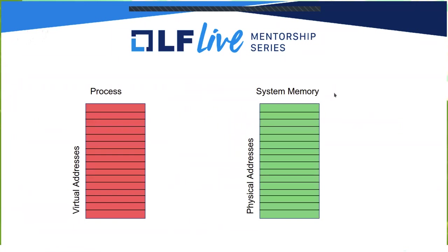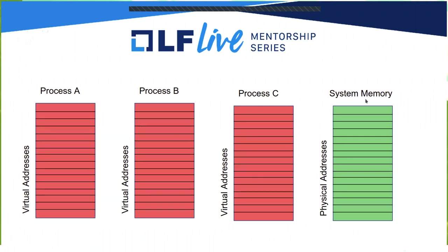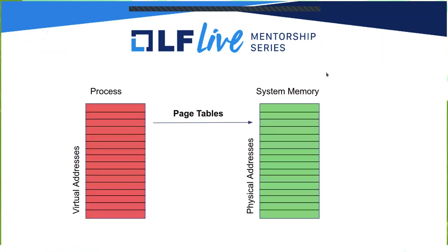If we have system memory divided into pages and we want to make that system memory available to processes, then it makes sense that a process's virtual address space is also divided into pages. We can also have multiple processes trying to get at that system memory. In this simple chart, we have three processes, all with a virtual address space — perhaps even the same virtual address space. The virtual addresses for process A could be the same as the virtual addresses for process B and process C, and they all want to get to system memory. So how do we translate process virtual addresses to system memory? The way that you do that is via something called page tables.